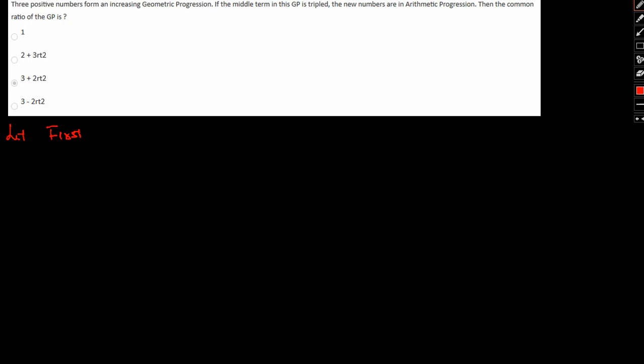So let the GP be A/R, A, AR. This is my GP. Now it's given that the middle term is tripled, so this term is tripled, so this becomes 3A and this will continue A/R and AR. So this particular term is an AP now.